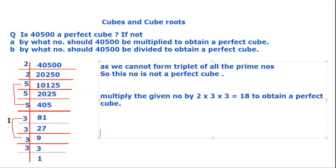Now see, this is a triplet form, this is a triplet form, so this is a triplet form, this is a triplet form, this is 2 twos and this is a 3 extra. So divide the given number by 2, 2 into 2 into 3, that is equal to 2 into 2, 4, 4 into 3, 12. To obtain a perfect cube.